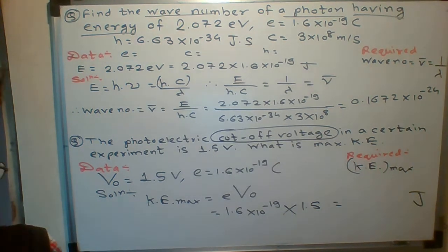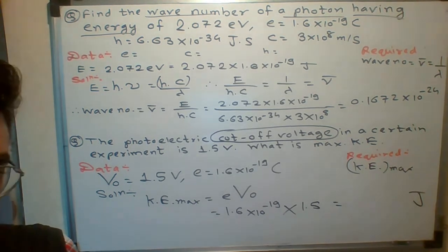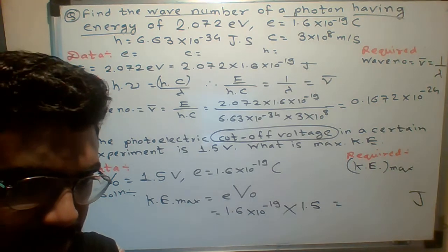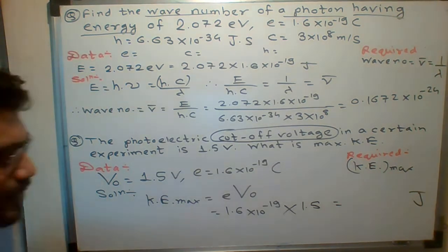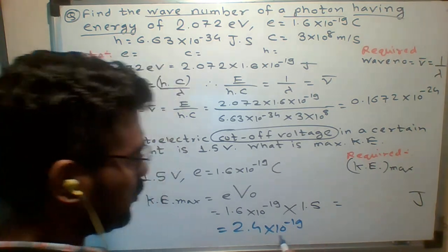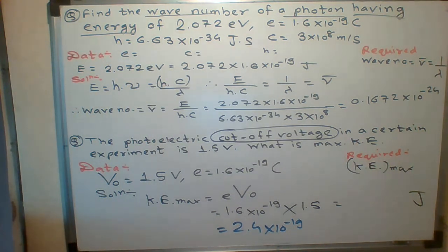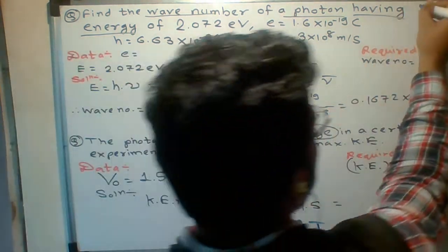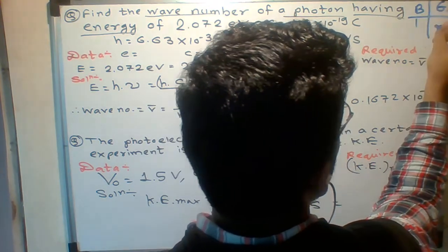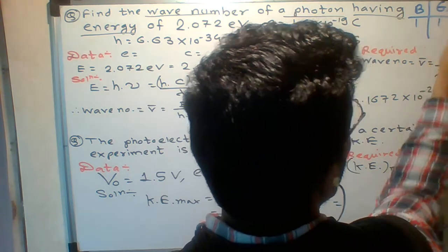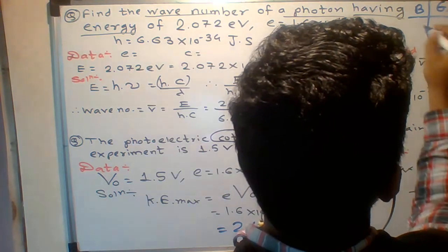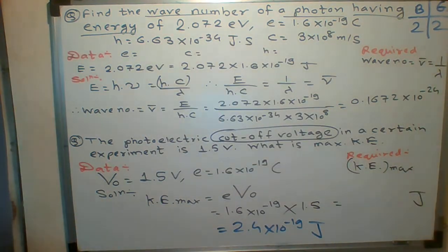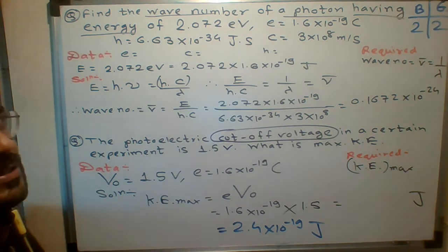The unit is meter inverse — very good. Victor gave me the answer for the second question: 2.4 × 10⁻¹⁹, and Adrian said the unit is joule. Excellent! There's good competition between boys and girls — Munshi gave the answer, Smira gave the unit, Adrian answered and Asmira confirmed the unit. Remember: always give the answer along with the unit — one mark for the answer and one mark for the unit.